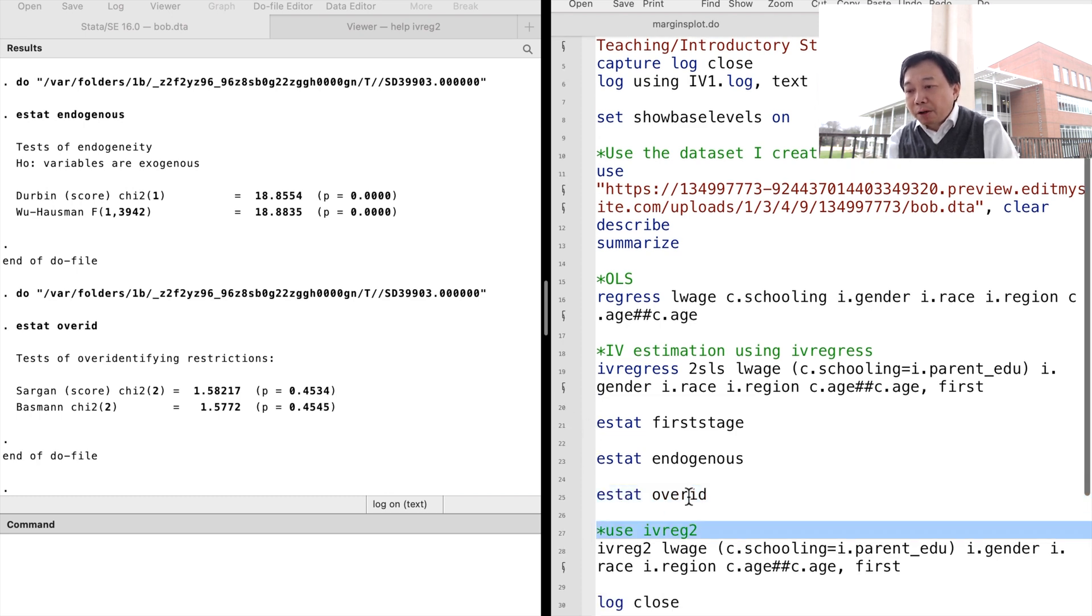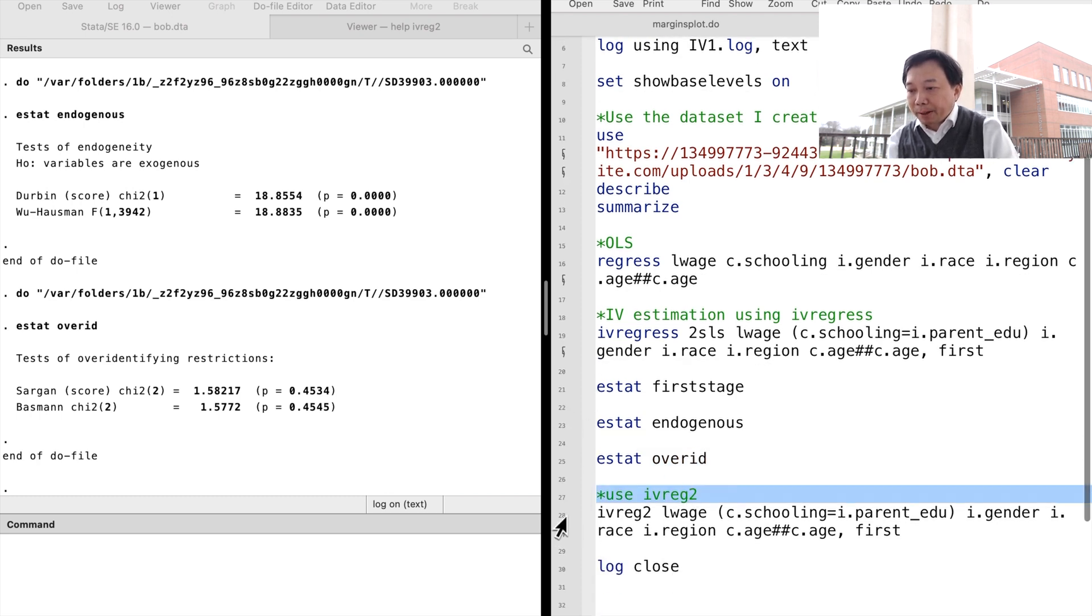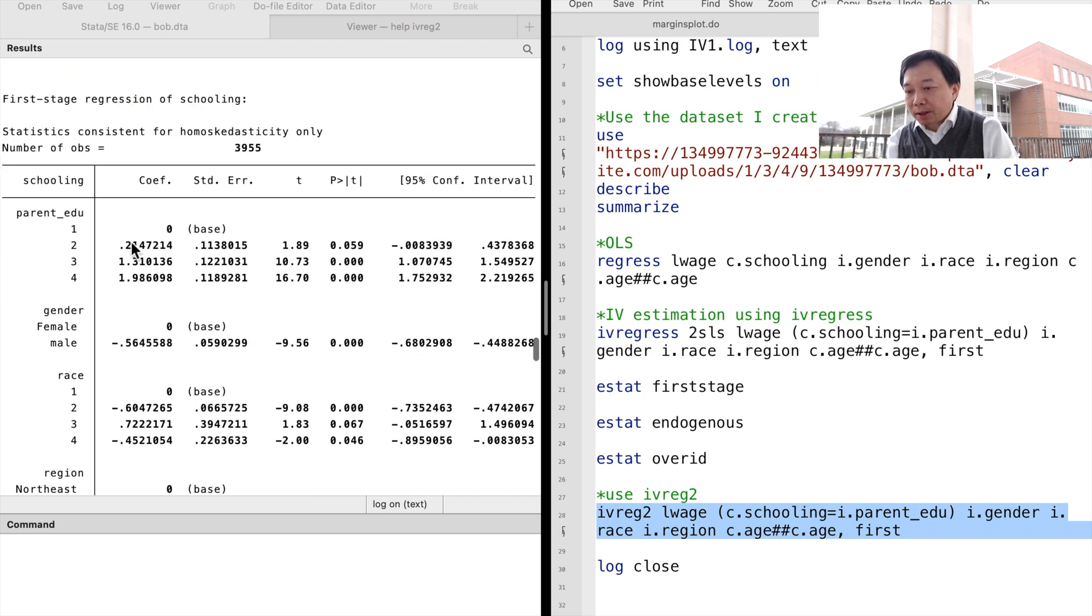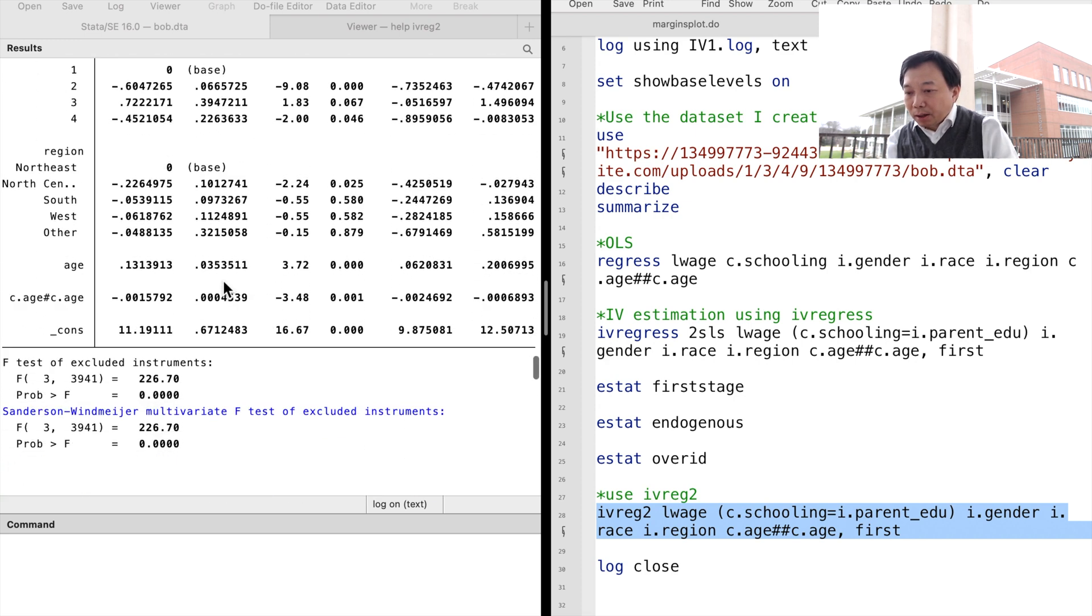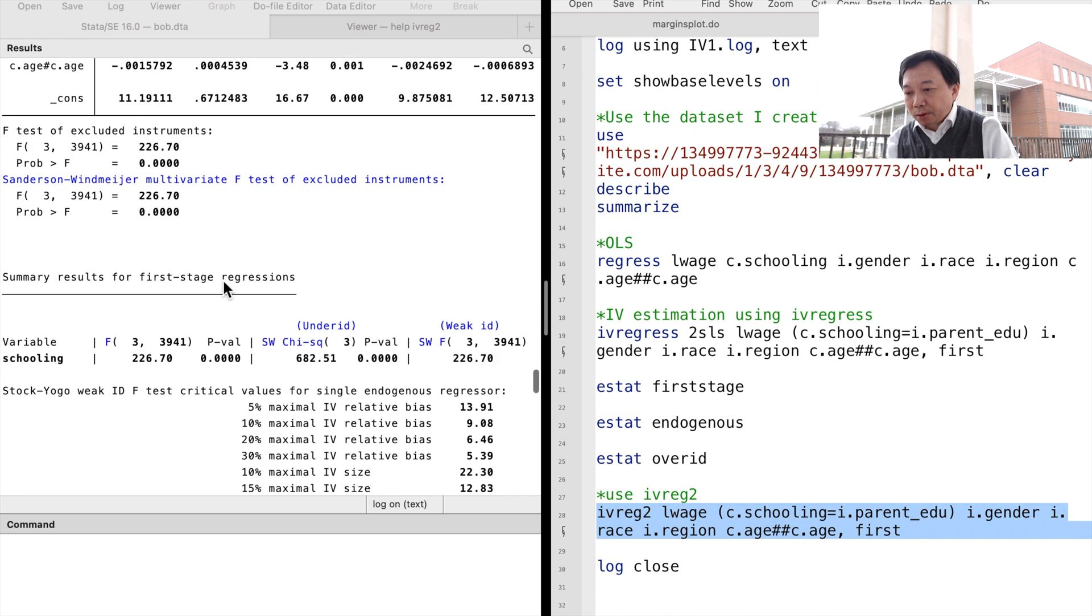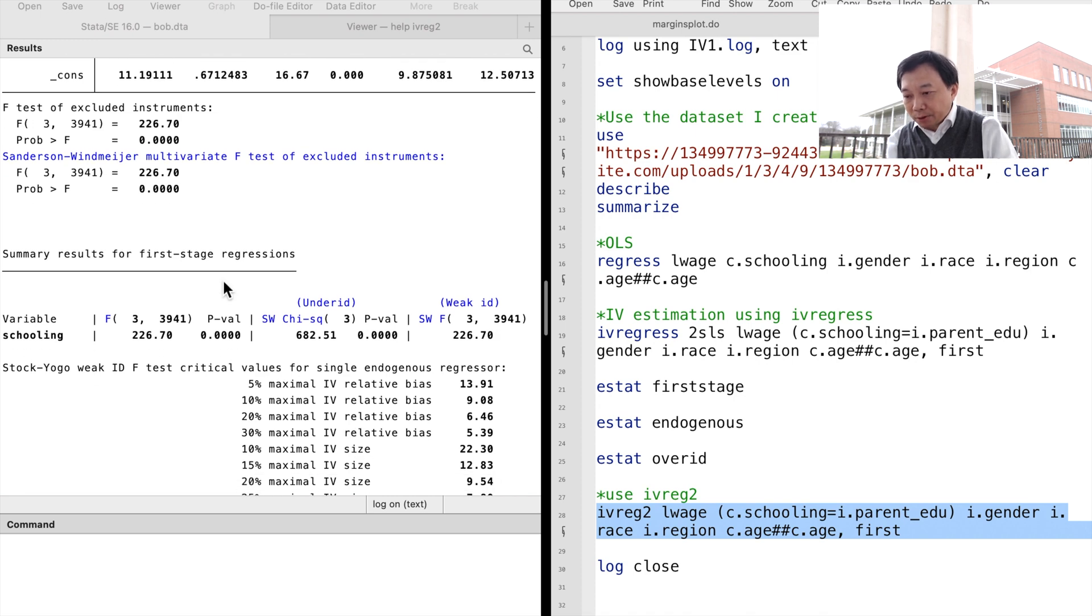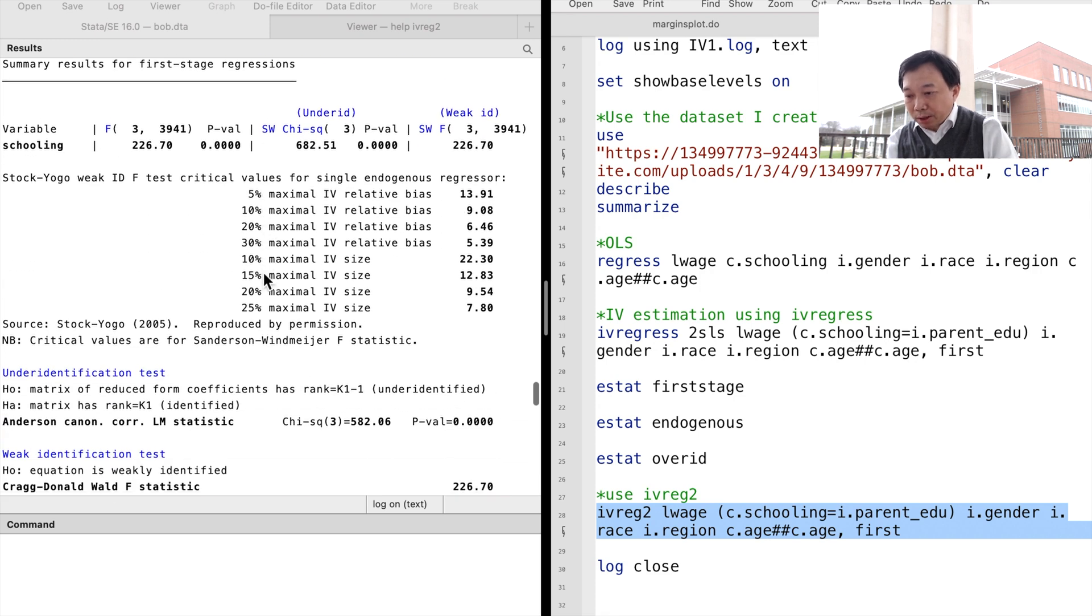We can also use the command ivreg2 to estimate the model. It provides exactly the same estimates in the first stage and the second stage as the ivregress command. It automatically produces diagnostic statistics such as the IV significant F test, the weak instrument test, the endogenous variable test, and the over-identifying restriction test.